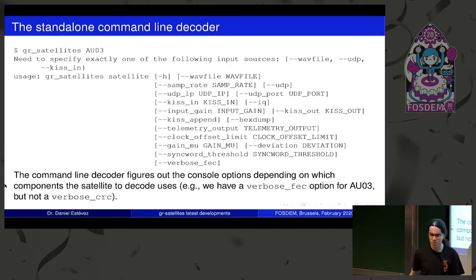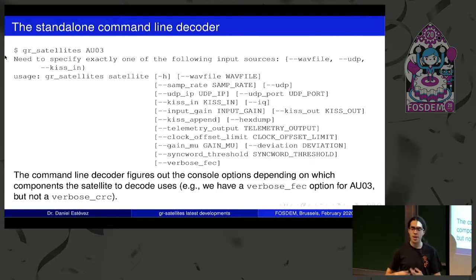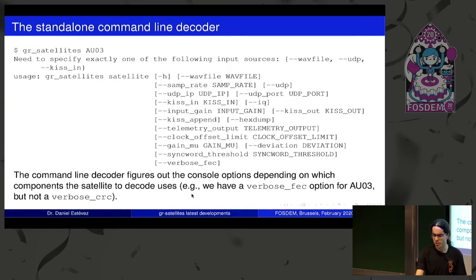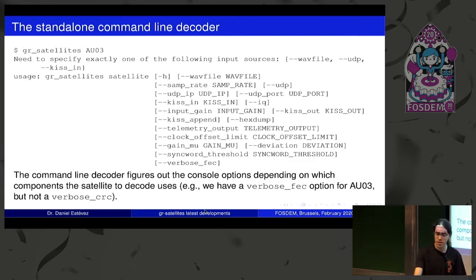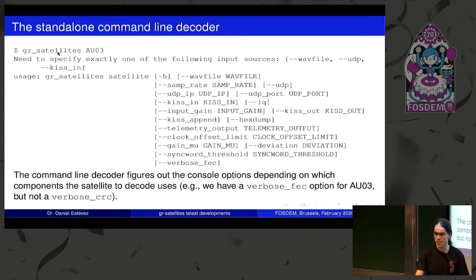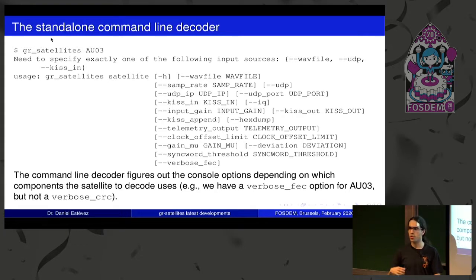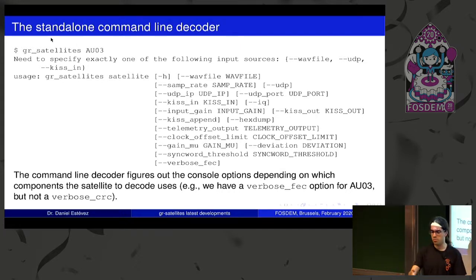The standalone command line decoder works like this: you run GR Satellites and then the name of the satellite, because the amount and type of command line parameters you get depends on what functionalities are needed to decode the satellite. For example, for this particular satellite we have forward error correction decoding, so there's a verbose FEC option, but there's no CRC, so there's no verbose CRC option. When you run GR Satellites AU03, it looks at the SATYAML file, figures out what component blocks it needs, and then asks every one of those component blocks what kind of command line options to include in the whole command line set.